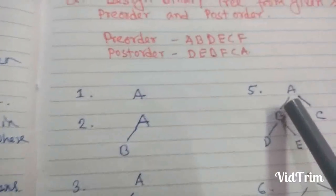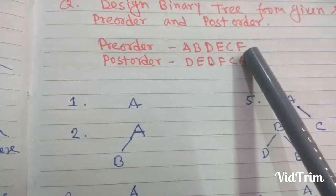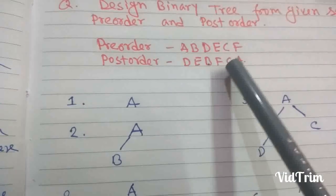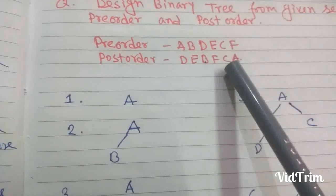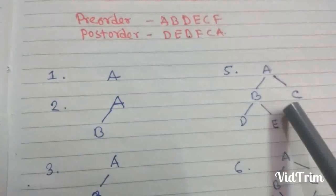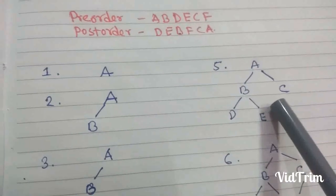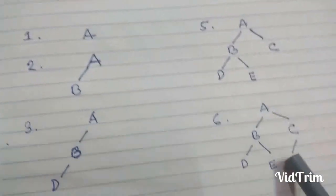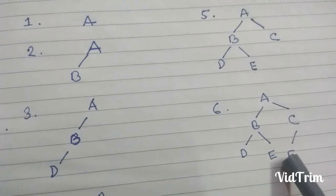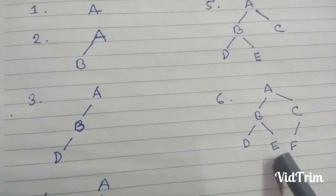In the last step, we take F. F appears before C in the post-order sequence, so F is a part of C. Since C has no left or right child, we place F in the left subtree of C. This completes the construction — it is the required binary tree.